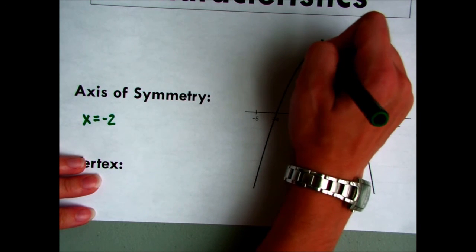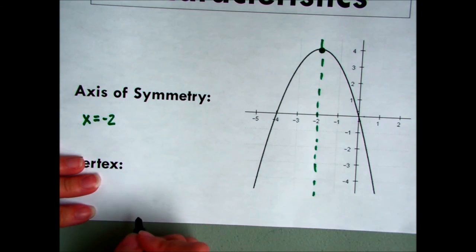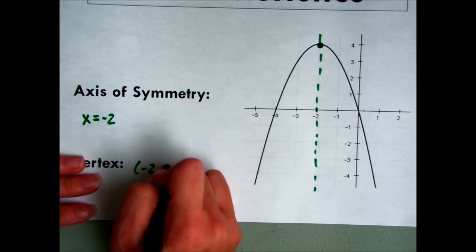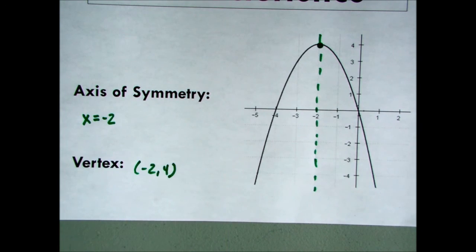What's the vertex? It's this highest point, which happens to be the maximum. So the vertex is here at negative 2, 4. So that's our vertex. And those are your characteristics of the function.